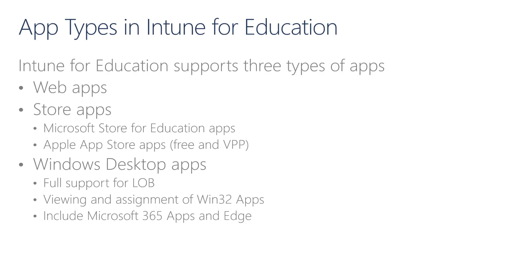Regarding Windows Desktop Apps, we have three different scenarios. First, there are the traditional line of business applications, or LOB — essentially MSIs — but this is a more traditional type we're no longer suggesting, as we're moving to Win32 applications. We will discuss Win32 applications in the second part of this module, but remember that from Intune for Education, we can view and assign Win32 applications but cannot create them. Lastly, we have an integrated experience to deploy first-party Microsoft applications: Microsoft 365 Apps, also known as Office 365 Pro Plus, and the latest version of Edge.